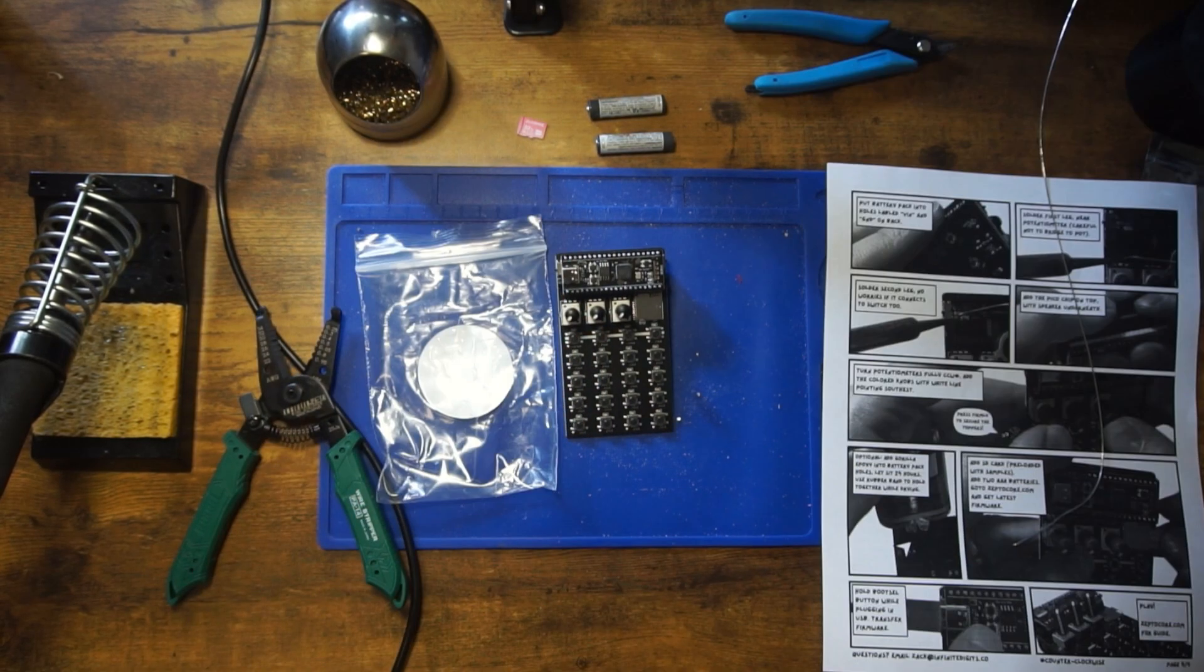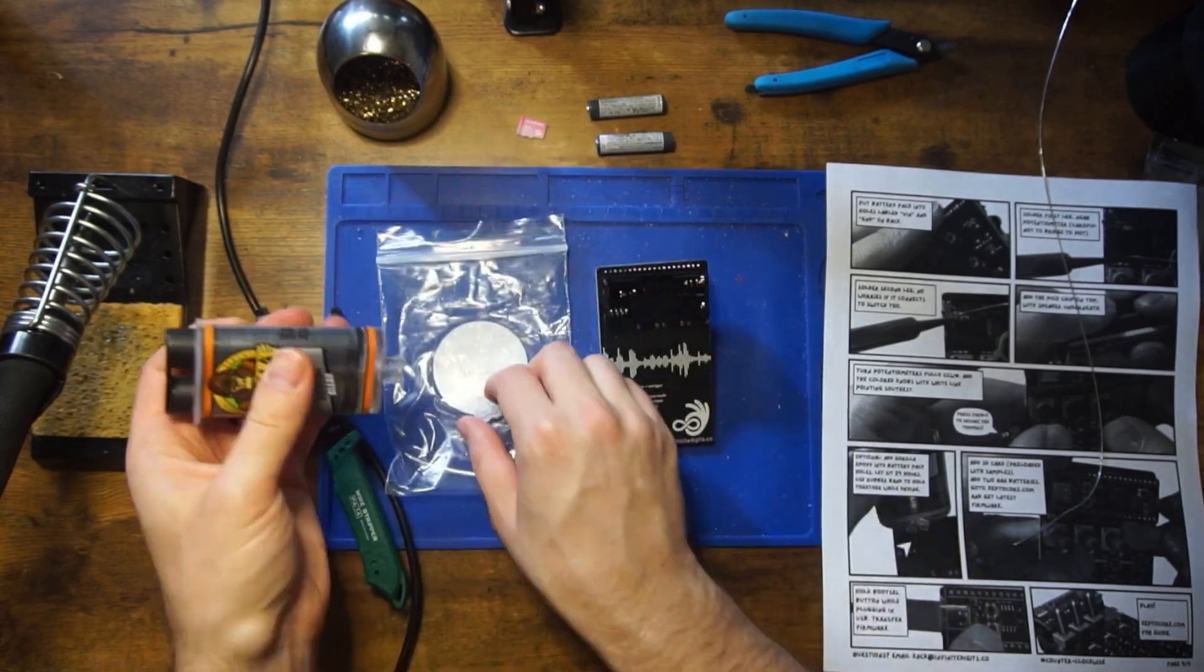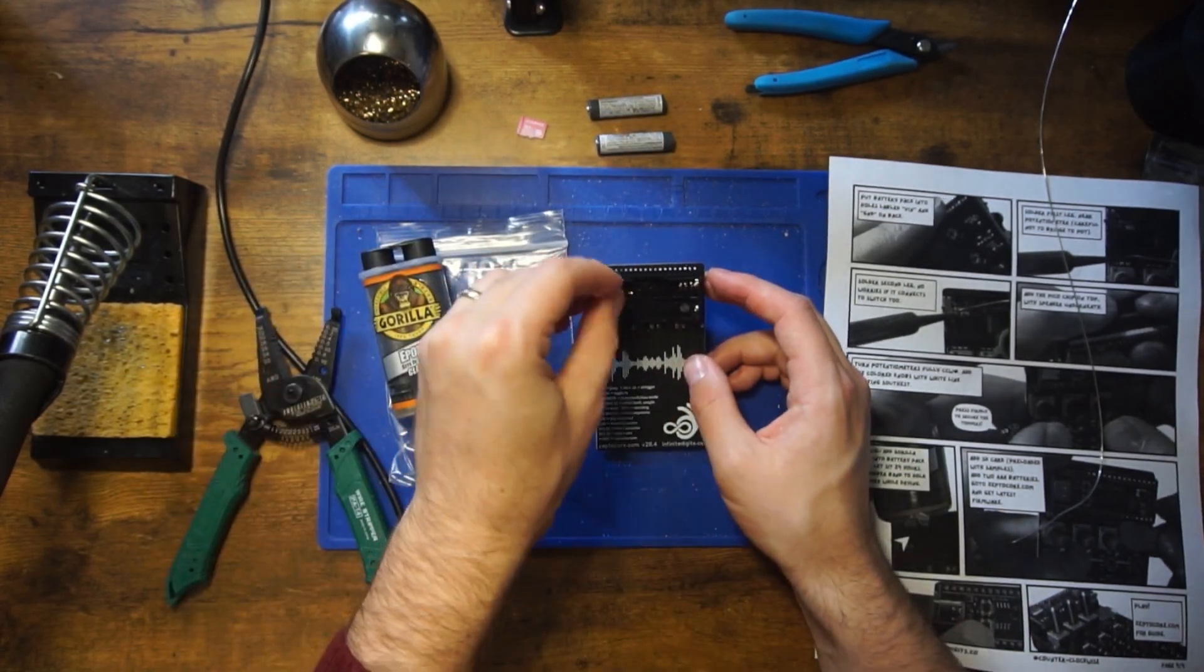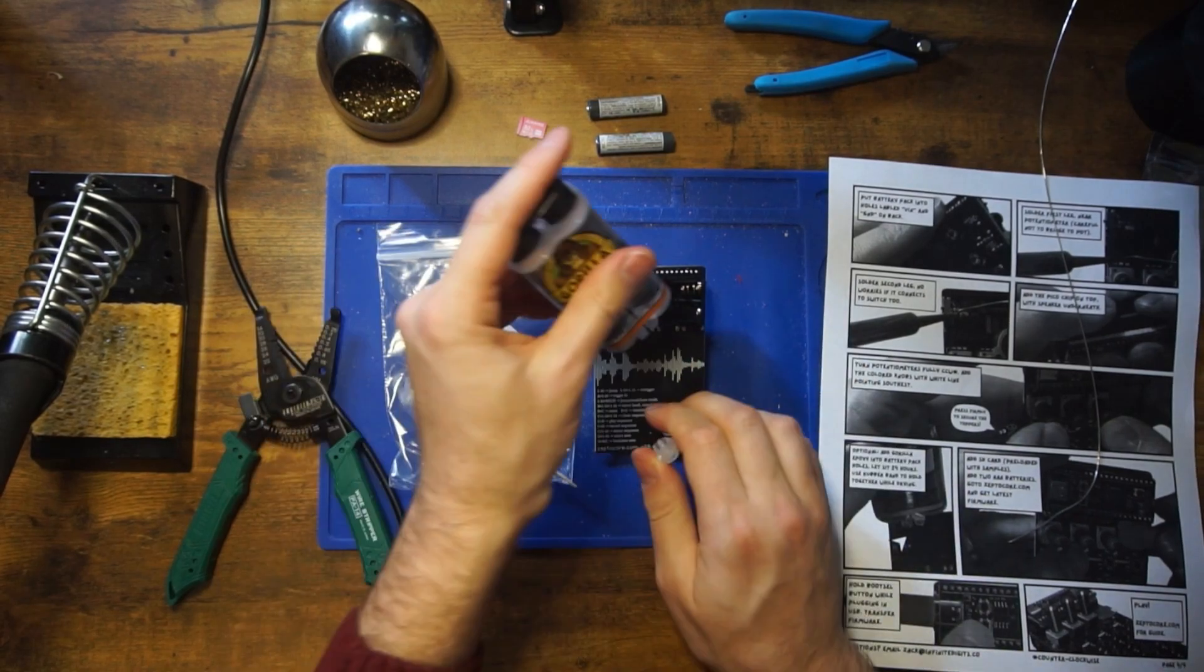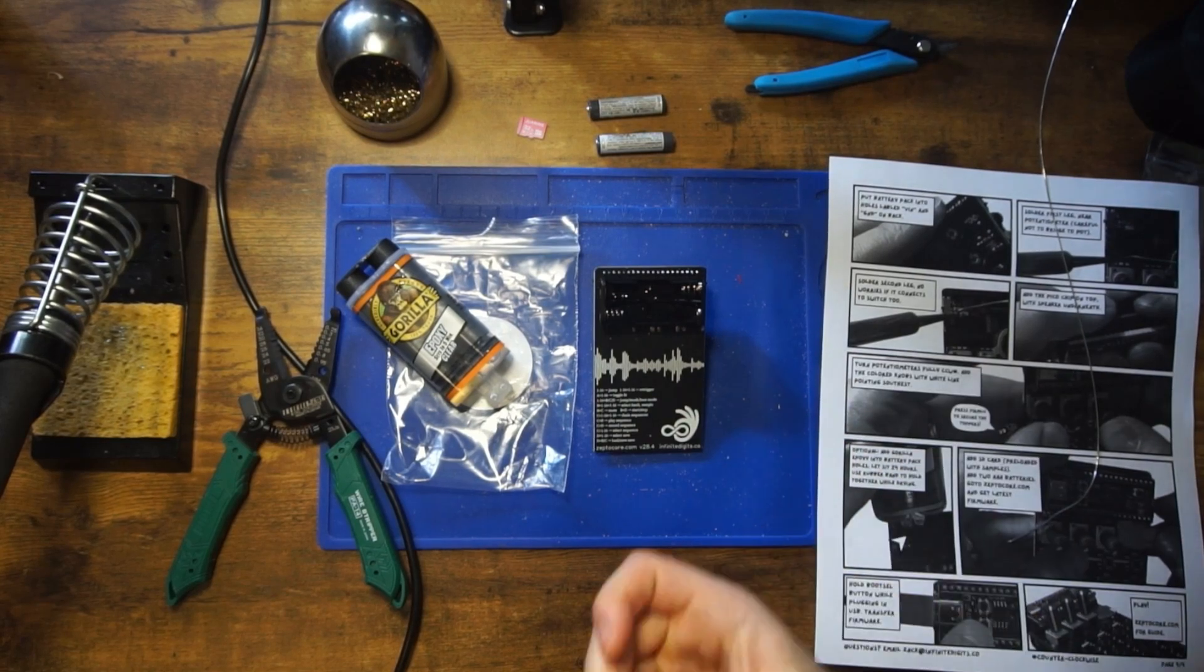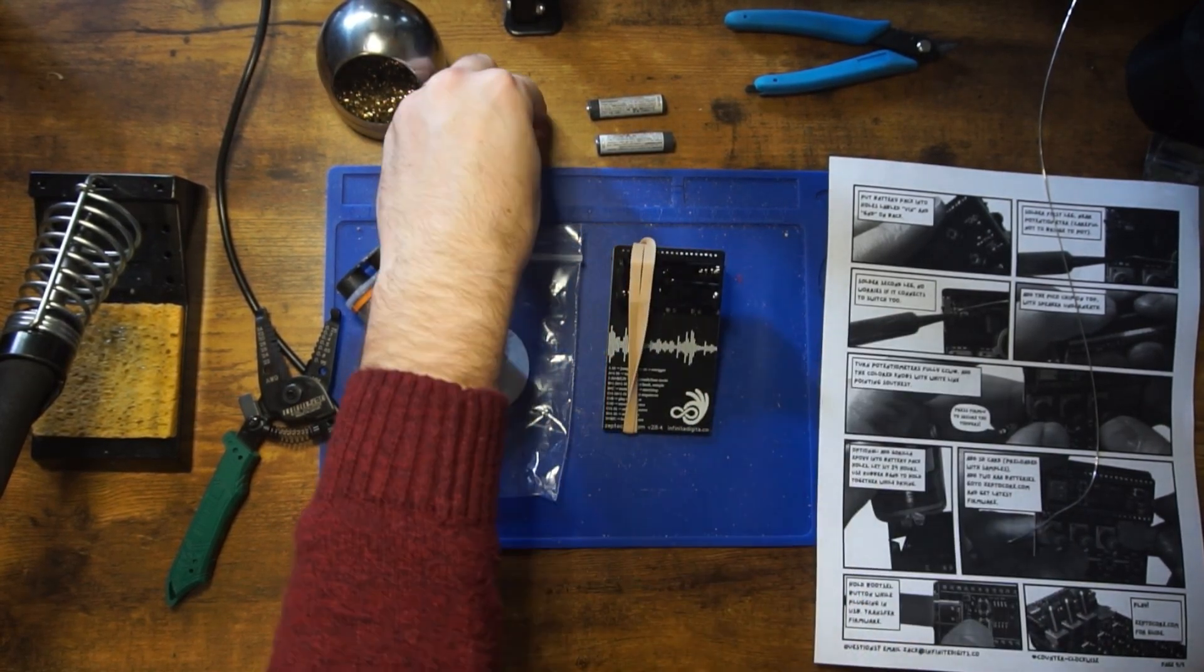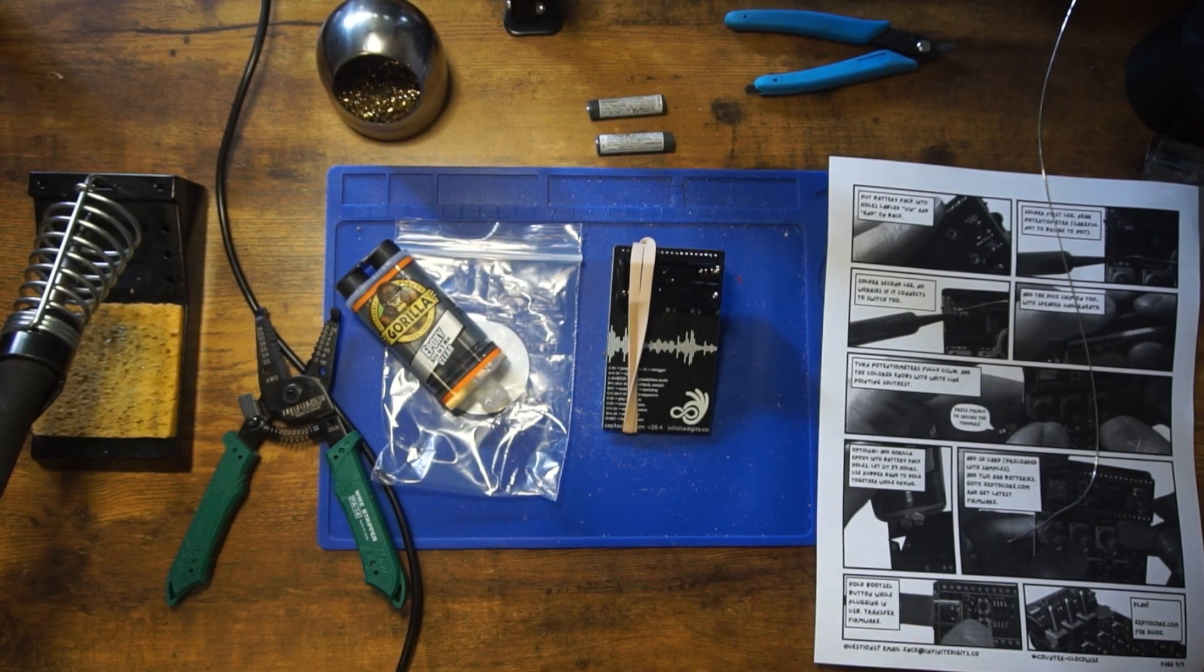Now this part is optional. You can take some Gorilla epoxy glue and then put a little dab inside the battery holder and one or two or the three holes and then use a toothpick to kind of circle it around and then rubber bands to hold it together. This will help keep the battery pack from moving anymore. Now wait about 24 hours if you've done the glue. If you haven't done the glue, you don't need to wait 24 hours.